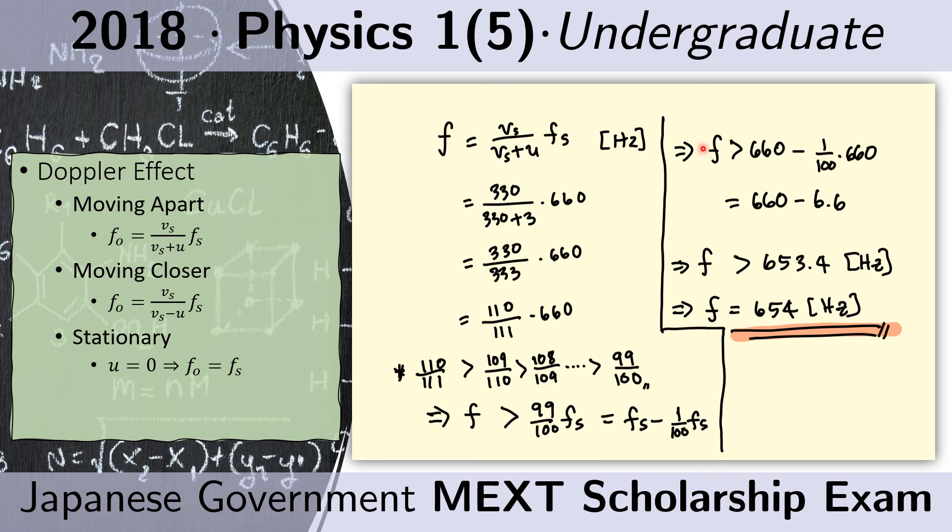So I now know that my F, my new F, must be greater than 653.4. In the choices, the only choice that satisfies this inequality is 654 Hertz.